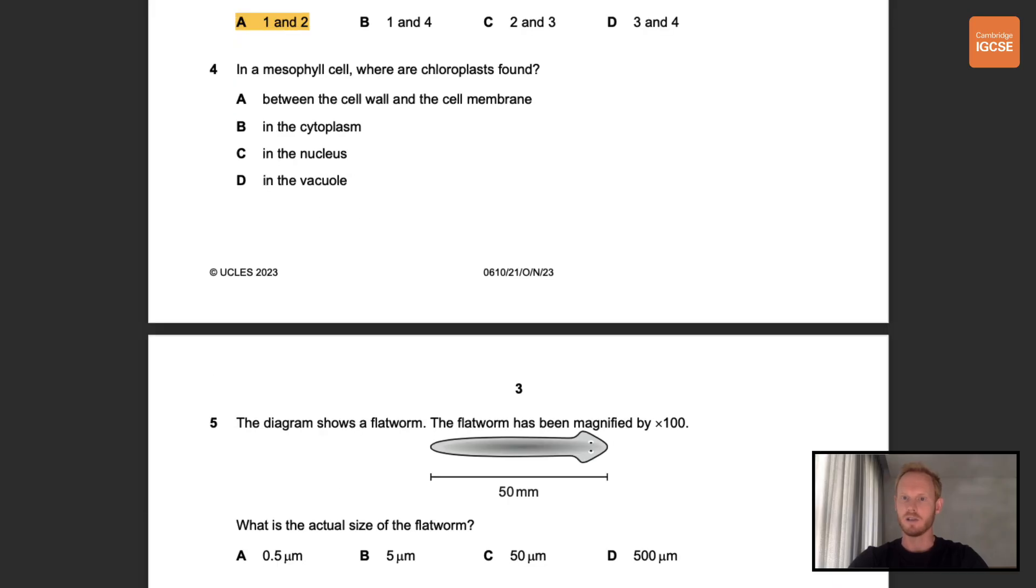Number four. In a mesophyll cell where are the chloroplasts found? Chloroplasts like all other internal organelles are located in the cytoplasm. So the correct answer here is B.